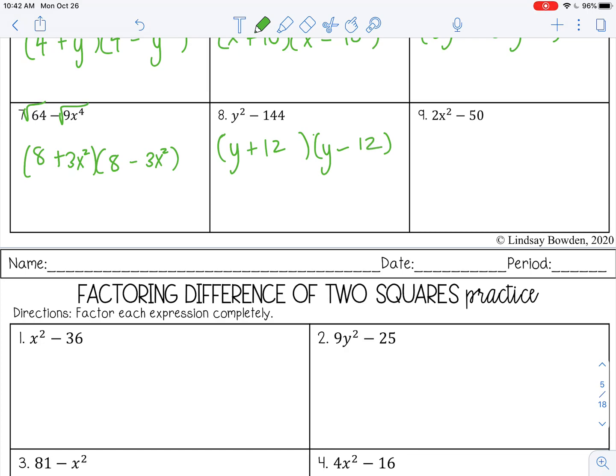Now, number 9 is a little bit different. If you notice, 2 and 50 are not perfect squares. Anytime you factor, you always want to check and see if there is a GCF first and factor that out first. That's why we learned GCF first. And this actually has a GCF of 2.